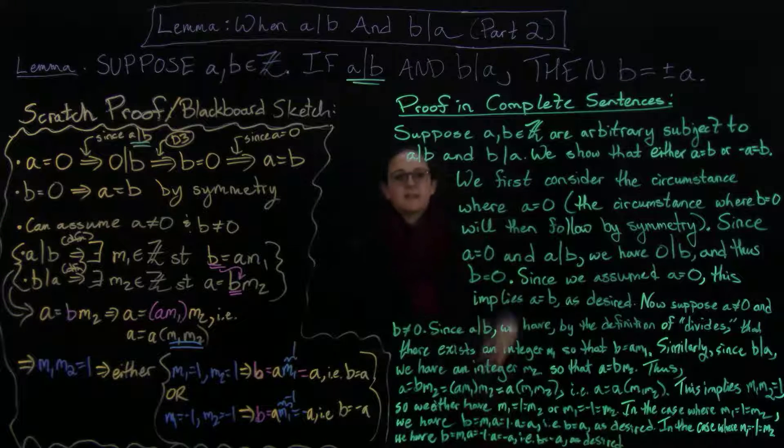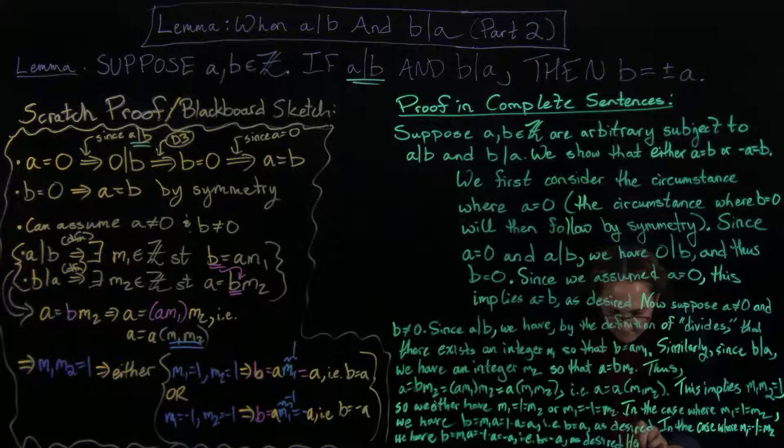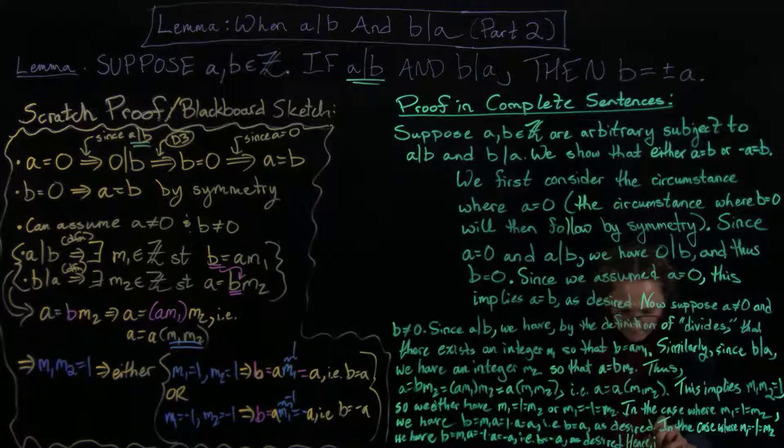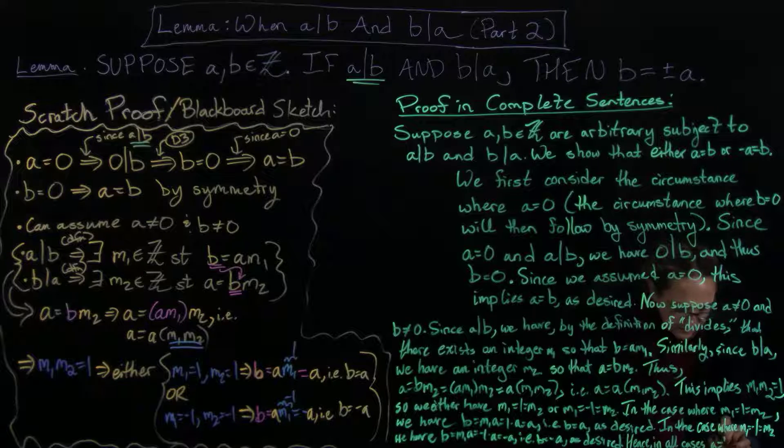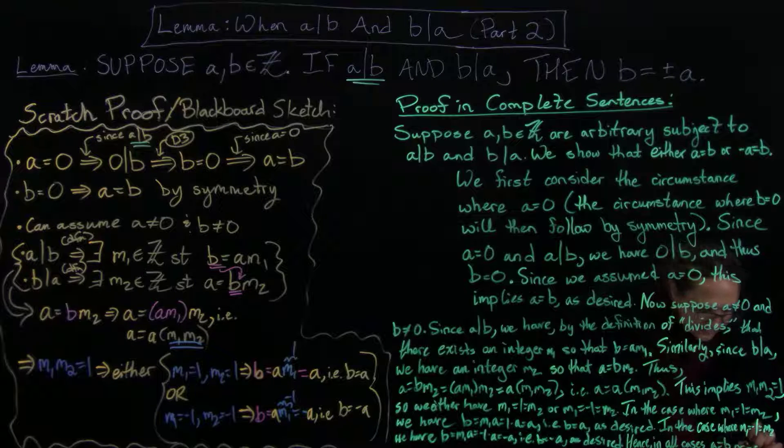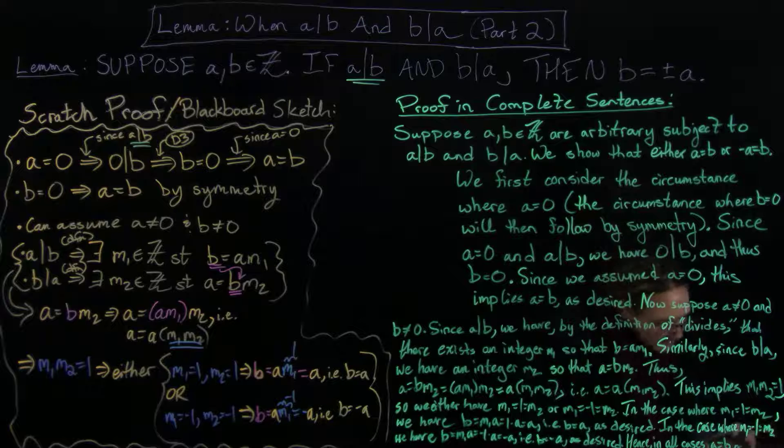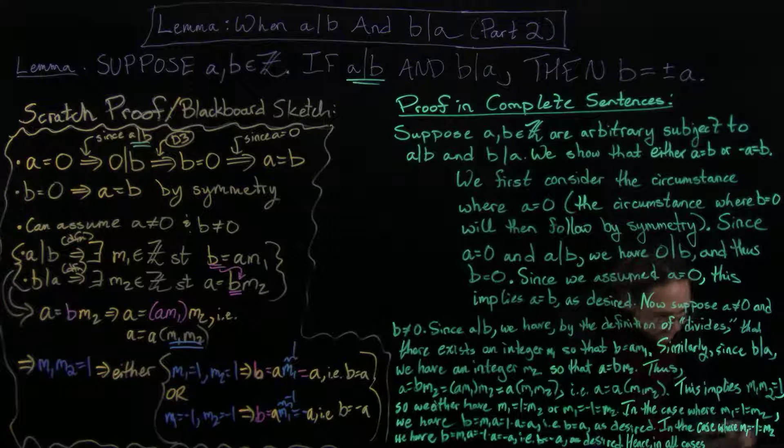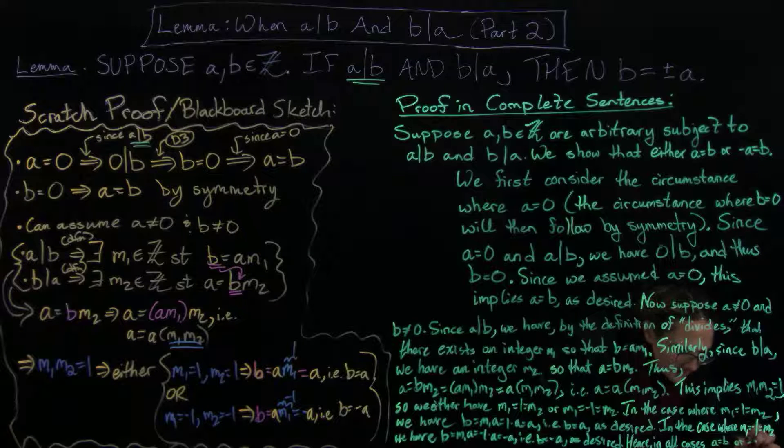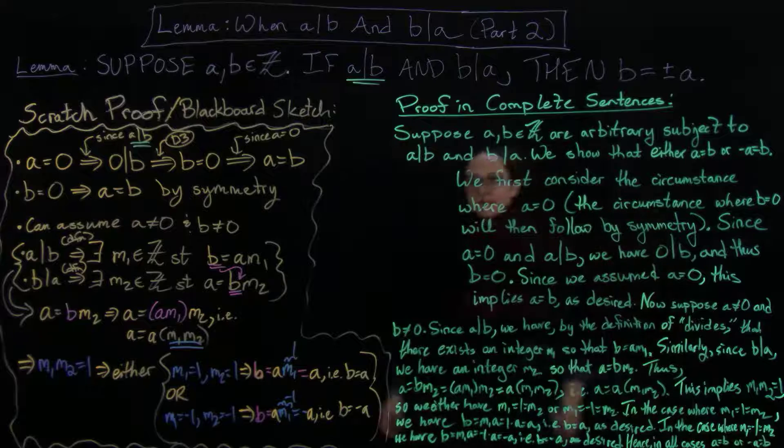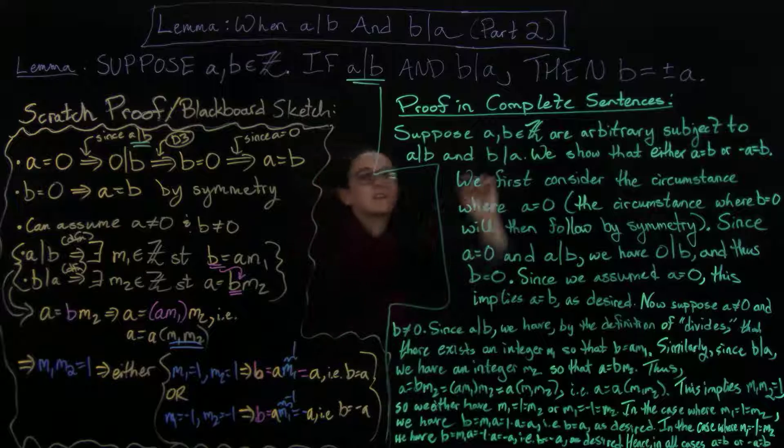And then we can say hence in all cases A equals B or minus A equals B. There we go, so this is our final product proof.